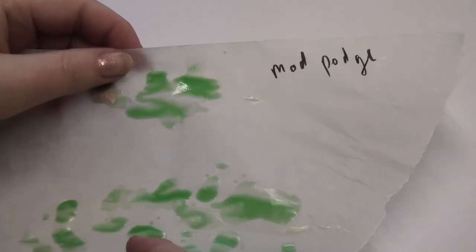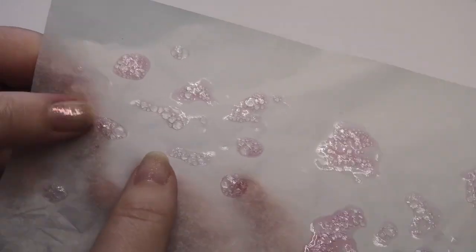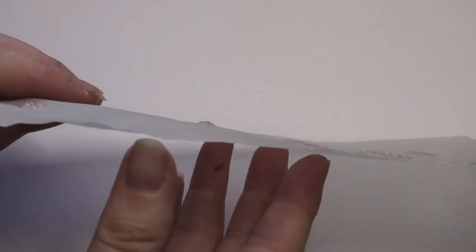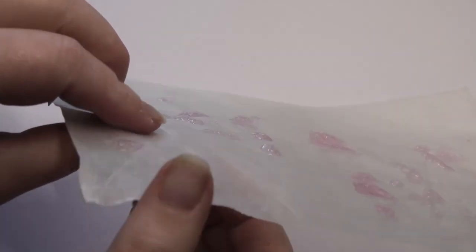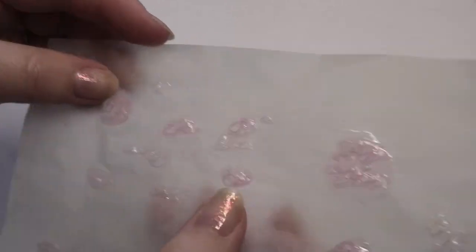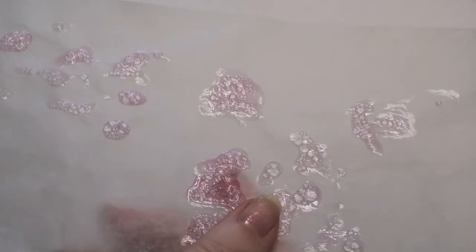My second attempt worked really well and gave me the best bubble result. For this one I just used a mixture of dishwashing liquid and Mod Podge. Unfortunately, my dishwashing liquid was pink so it resulted in pink bubbles. But they kept their shape really well and were relatively sturdy once dry. I even experimented by putting UV resin over a few of them to protect them and give them more structure which worked really well.